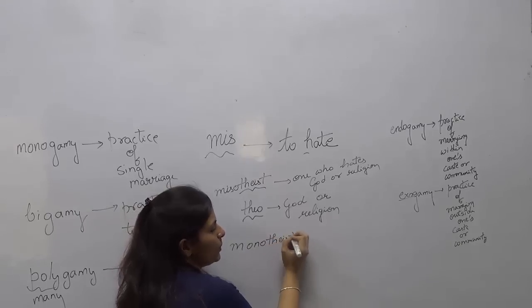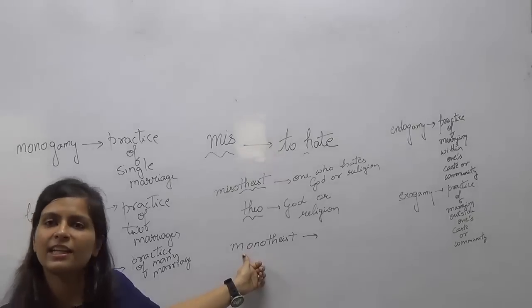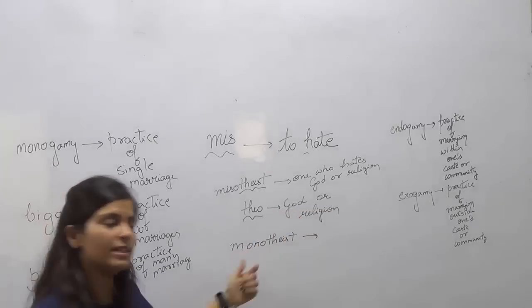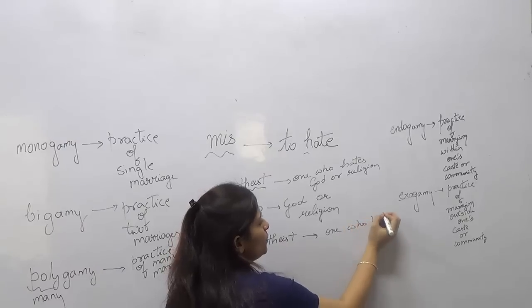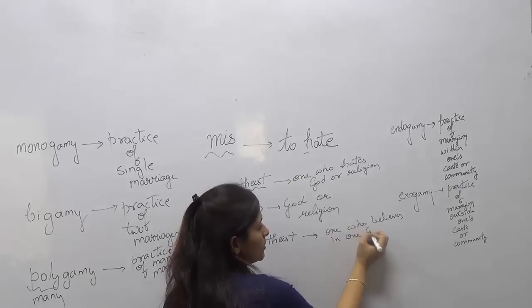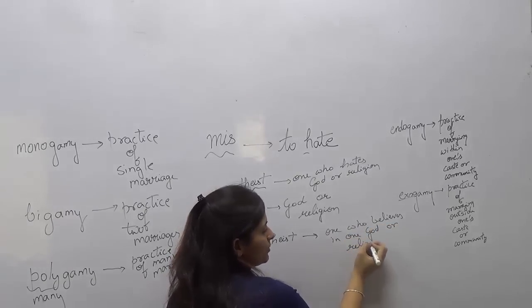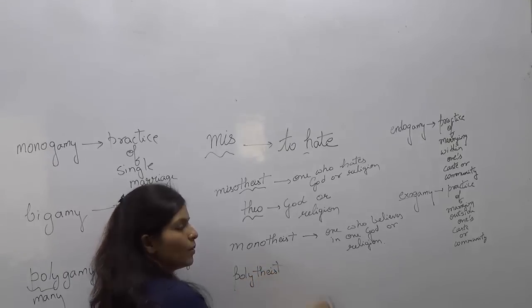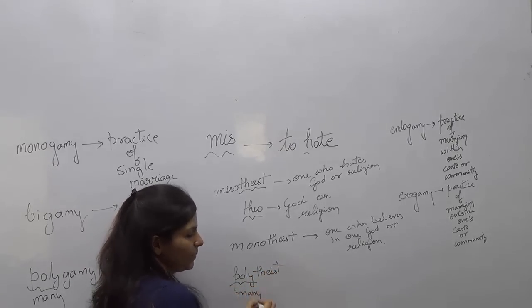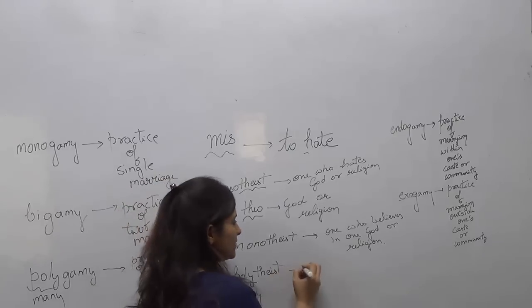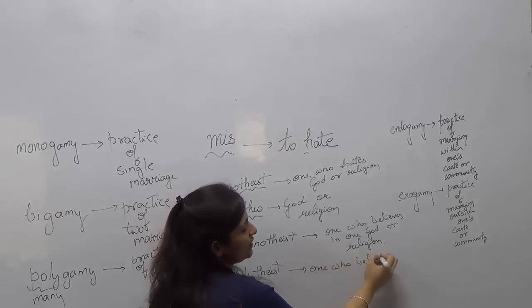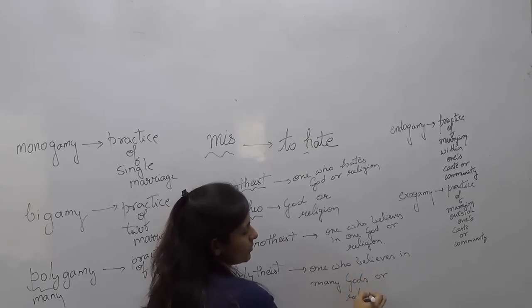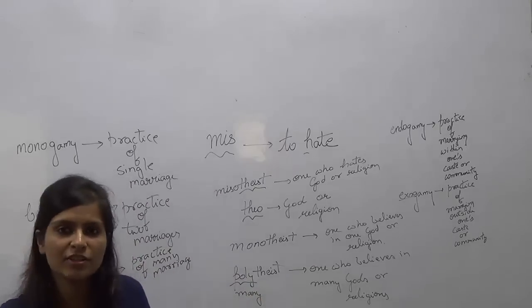Now, 'monotheist' — I think you will be able to tell the meaning. 'Mono', as studied in monogamy, means one or single, and 'theo' is God or religion. So the meaning of 'monotheist' is one who believes in one God or religion. Next word: 'polytheist'. 'Poly' means many, and 'theo' is God or religion. So a polytheist is one who believes in many gods or religions.